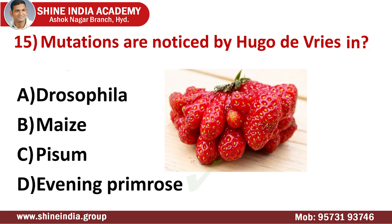Question number fifteen: mutations are first noticed by Hugo de Vries. A mutation is a change in a DNA sequence. Mutations can result from DNA copying mistakes made during cell division. A gene mutation is a permanent alteration in the DNA sequence that makes up a gene, such that the sequence differs from what is found in most people. Mutations can occur during DNA replication if errors are made and not corrected in time. Mutations can also occur as a result of exposure to environmental factors such as smoking, sunlight, and radiation.